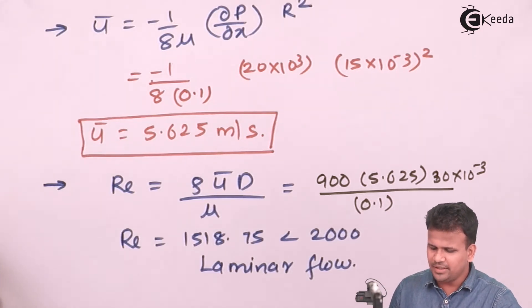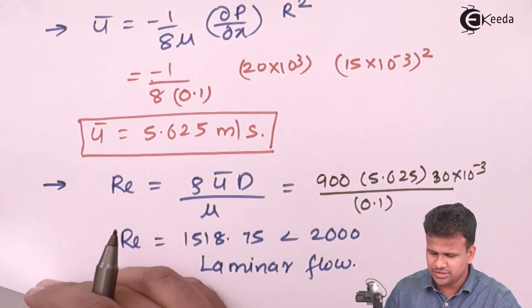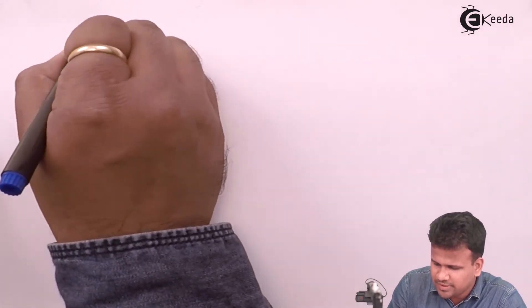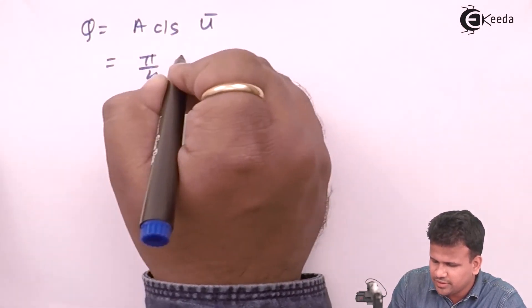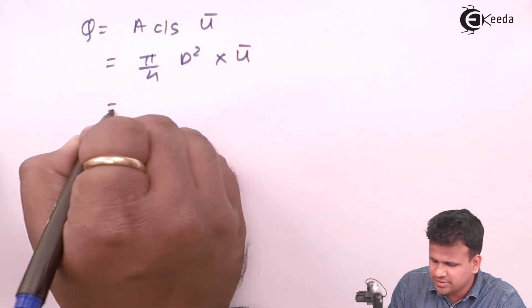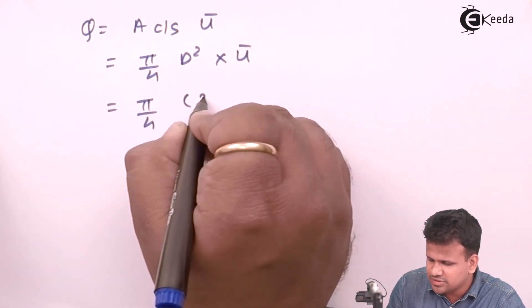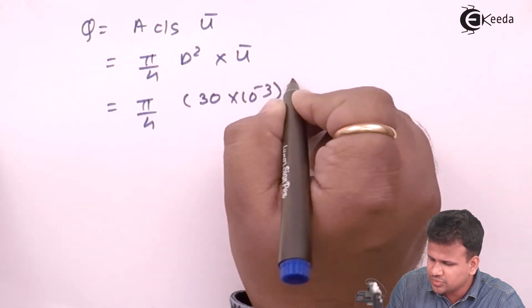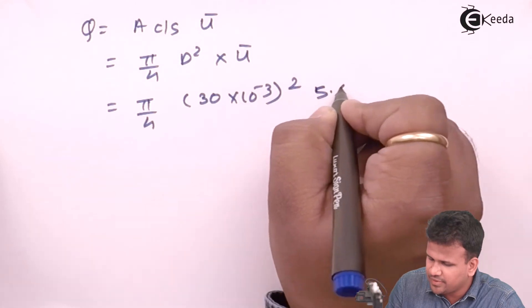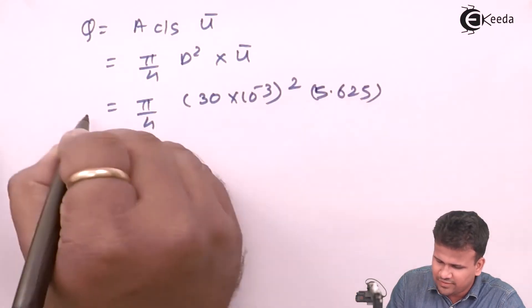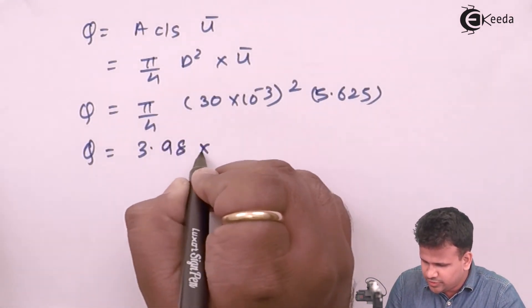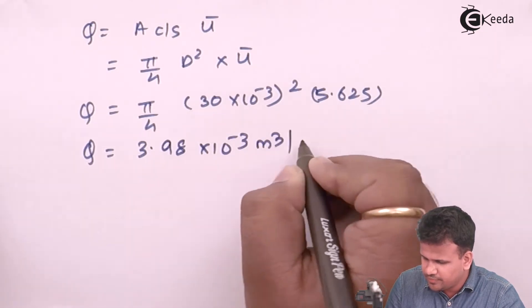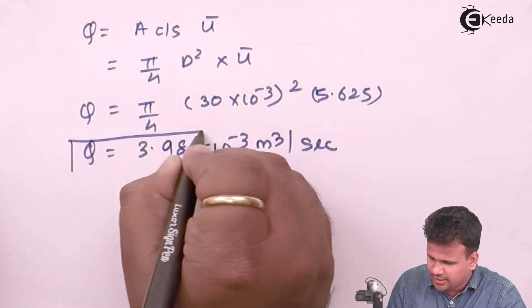Next, we calculate discharge Q = (π/4)D² × Ū = (π/4) × (30×10⁻³)² × 5.625. After calculating, the flow rate comes out to be 3.98×10⁻³ m³/s. This can be converted into m³/min or kg/min by multiplying by density and dividing by 60 seconds.